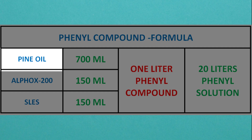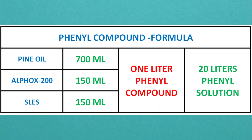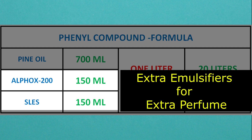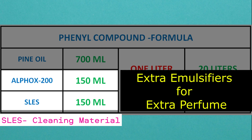But the problem is, it is not necessary to use concentrated penyl for our bathroom disinfection purpose — diluted solution is sufficient. I mean 30 to 35 ml of 32% penyl in 1 liter water will give the required concentration of disinfectant. But penyl is immiscible with water, so we are mixing some amount of emulsifiers — that is Sles and Alphox 200. Apart from penyl, we are also adding some perfumes, so we need to consider excess amount of emulsifiers. If the emulsifier is preferably a surfactant, it is an added advantage — cleaning purpose will also be served. This is how the formula has been developed.